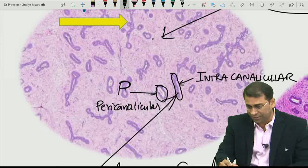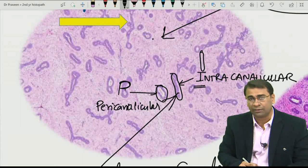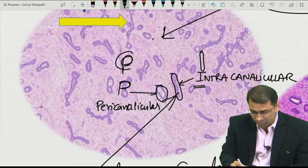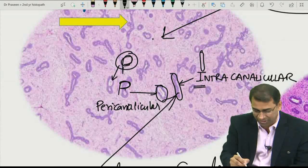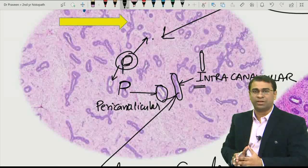So, how you remember it? Look, intra is I, the duct is also looking like a I. And peri is this P, this P round, this round duct. Look, this is a round gland, this round gland. This will be called as pericanalicular.